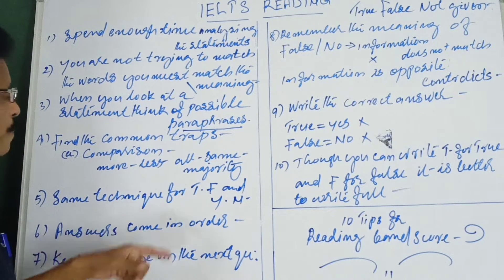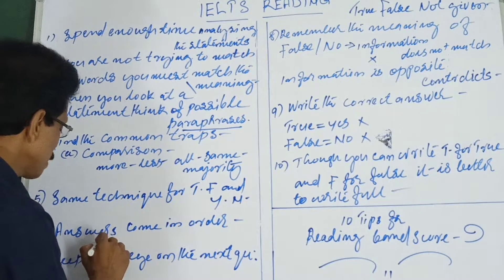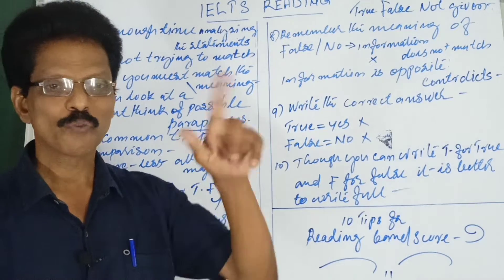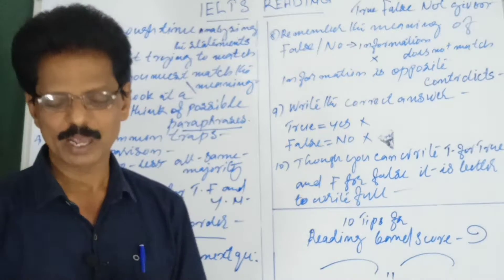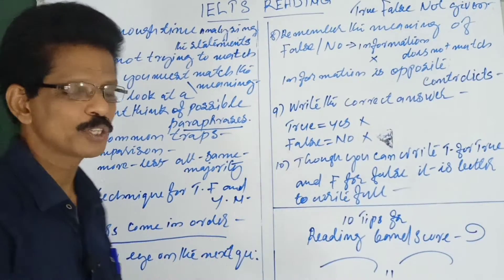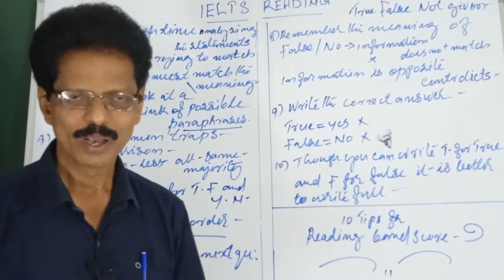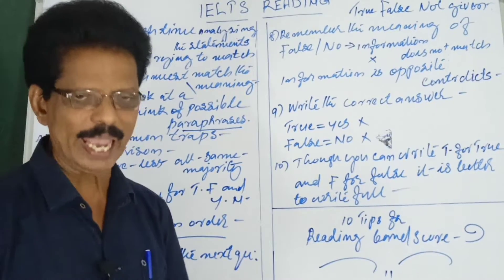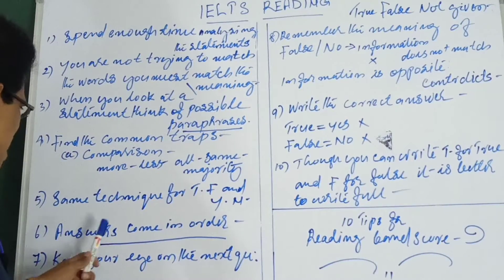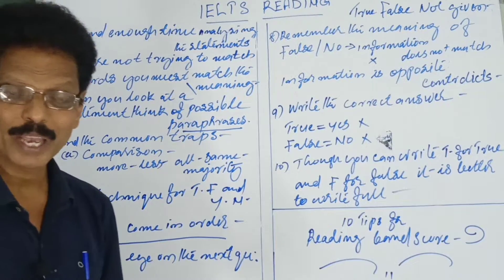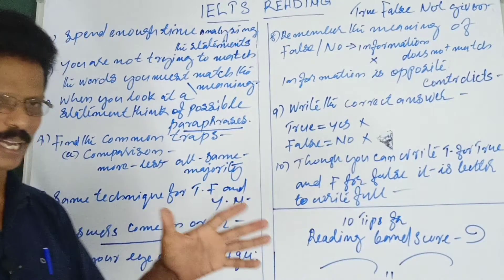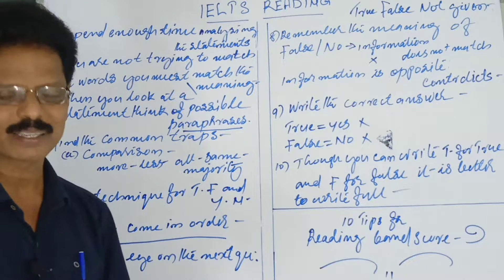Tip number six: answers come in order. This is very important. If you are searching for answer number five, it will be located in the passage between where answers four and six appear. If you are searching for answer number three, it will be between two and four. Read only that portion of the passage — don't read the entire passage from start to end. You can save a good amount of time by remembering that answers come in order.